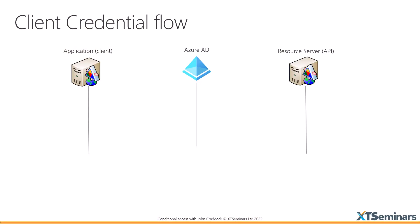Let's start by talking about client credential flow, also called client credential grant in OAuth2 speak. We have three players: the application that wants to access the API — referred to as the client in OAuth2, which has a client ID — the API sitting on our resource server, and an authorization server. In our environment that is Azure AD. The first thing that happens is the application makes a request to Azure AD at the token endpoint, asking for an access token to prove it's authorized to access the API, along with its credentials.